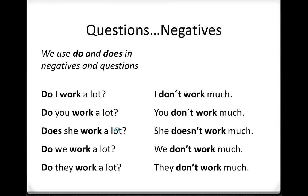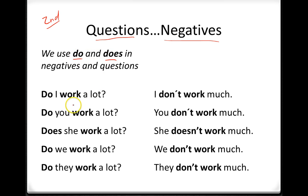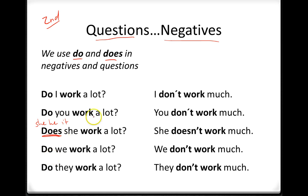So that is expressions of frequency. Now let's move on to the second part: questions and negatives. With the simple present, if you want to ask questions, we use 'do' and 'does.' Do I work a lot? Do you work a lot? Does she work a lot? Do we work a lot? Do they work a lot? Notice that he, she, it uses 'does.' Everyone else uses 'do.' These are used to ask a question.